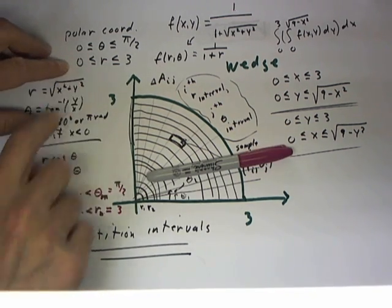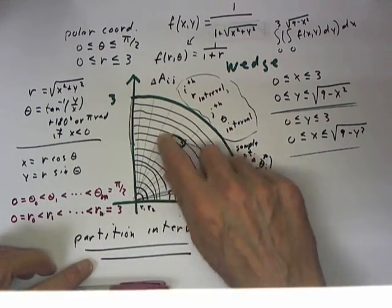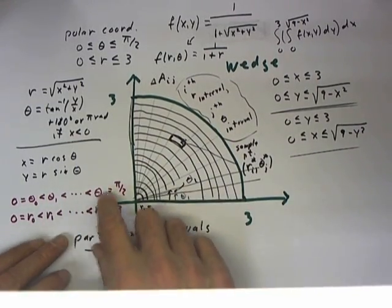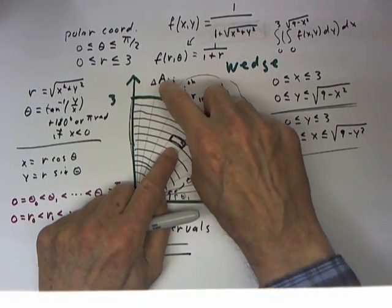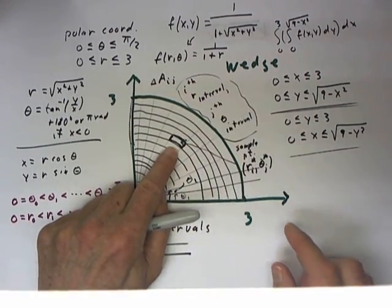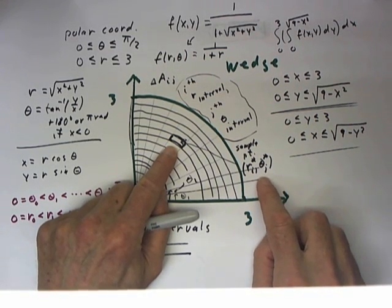We've partitioned our theta and r intervals, illustrated what it means to work within this partition, and considered a typical area increment a_ij, where the sample point is r_i* theta_j*.